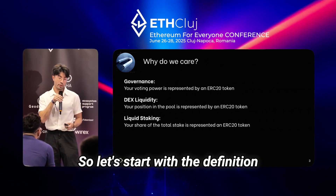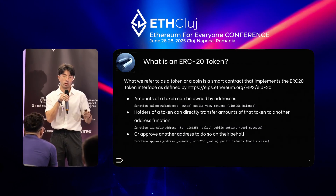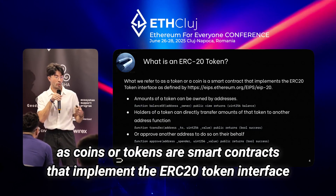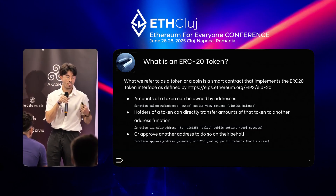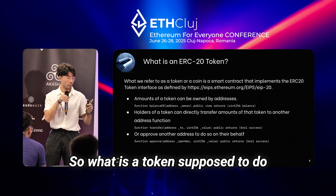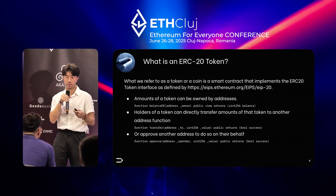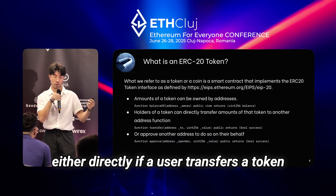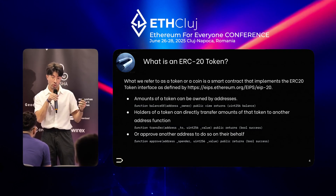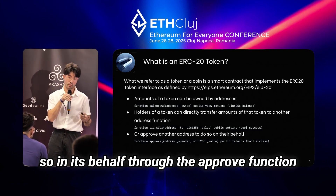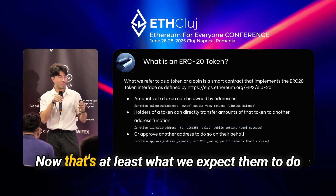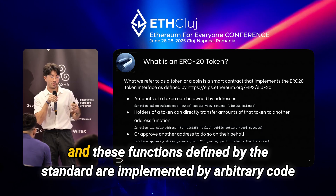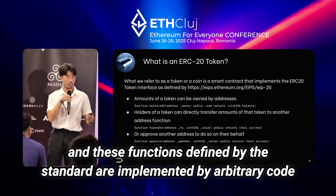So let's start with the definition. What is an ERC20 token? What we refer to as coins or tokens are smart contracts that implement the ERC20 token interface as defined by EIP-20. Amounts of a token can belong to addresses — this is what the balanceOf function returns. Amounts can also be transferred either directly, or indirectly if a user approves another address to do so on its behalf through the approve function. Tokens are smart contracts and these functions defined by the standard are implemented by arbitrary code.